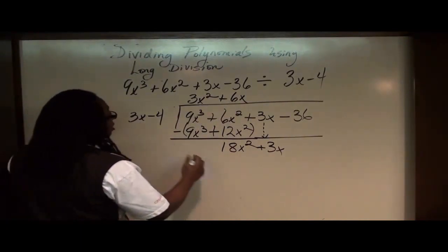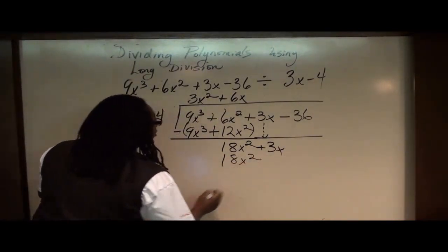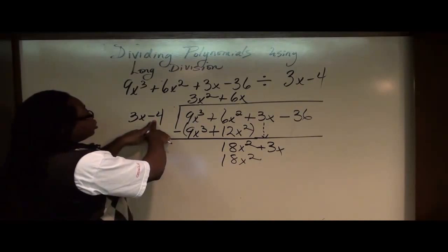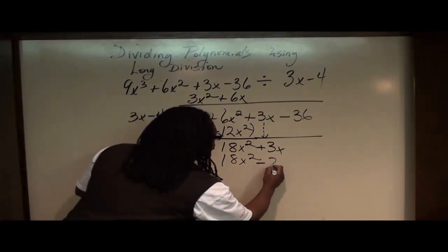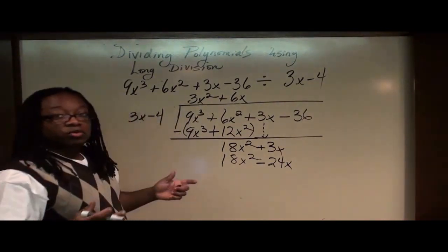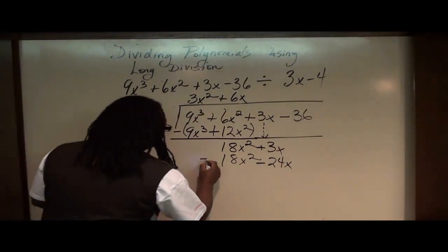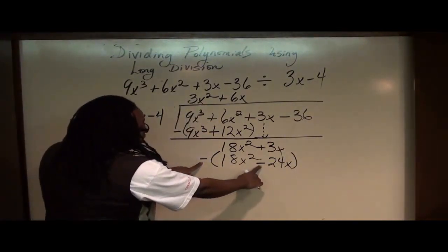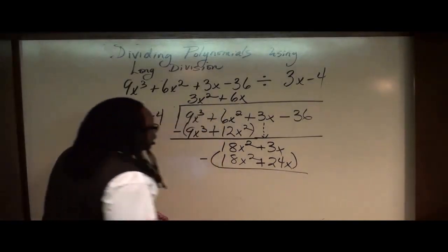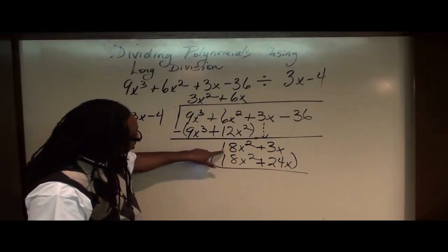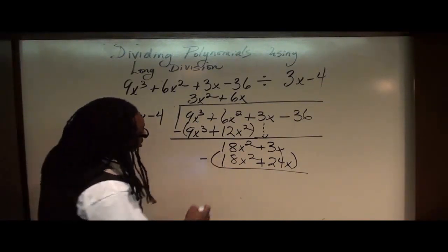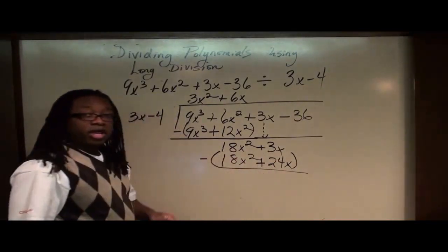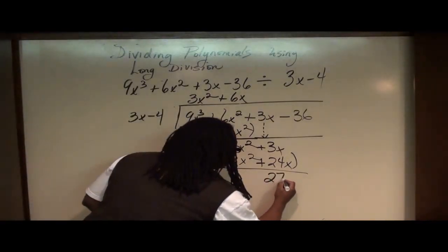6x times 3x gives us 18x squared. And 6x times negative 4 gives us negative 24x. So what do we do? We subtract. Again, we have that situation where we have this negative here, and this negative here, so that makes this number a positive. And if you subtract 18x squared minus 18x squared, you're going to get 0, and then 3x plus 24x gives us 27x.